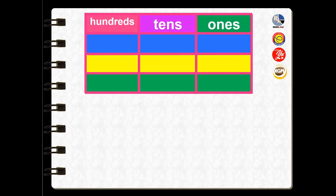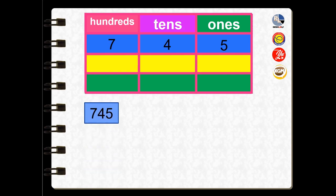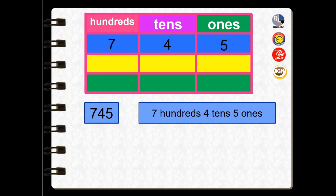Let's look at the next number — seven hundred and seventy-five. Place value of digit five is ones. Place value of digit four is tens. Place value of seven is hundreds. So 745 we can write as seven hundreds, four tens, five ones.